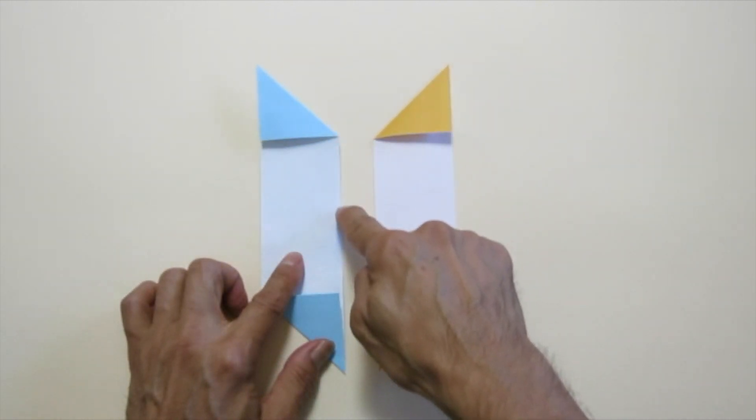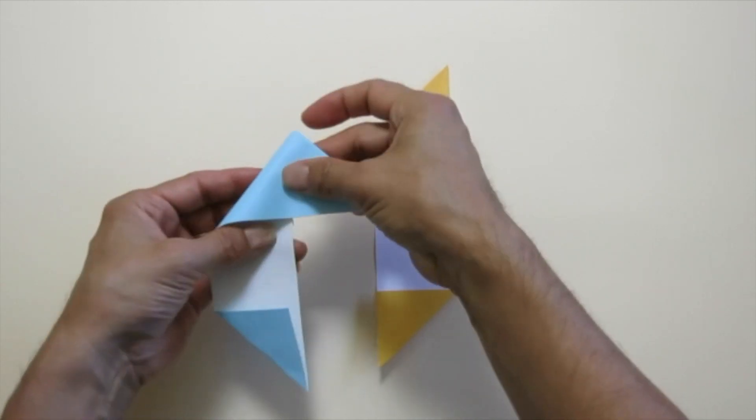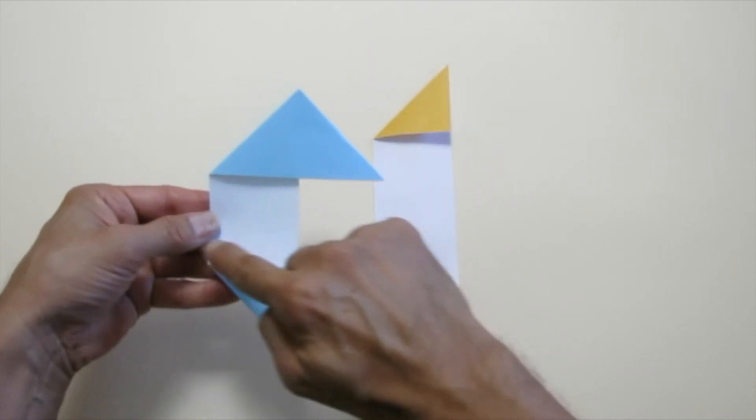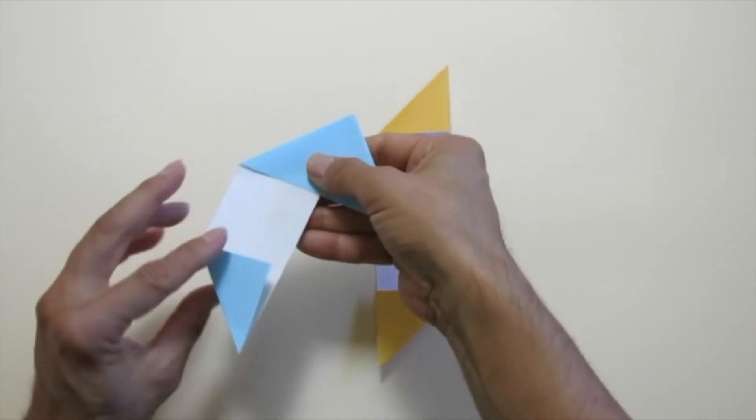Bring this edge to the right edge. Make a valley fold. Bring this edge to the left edge. Make a valley fold.